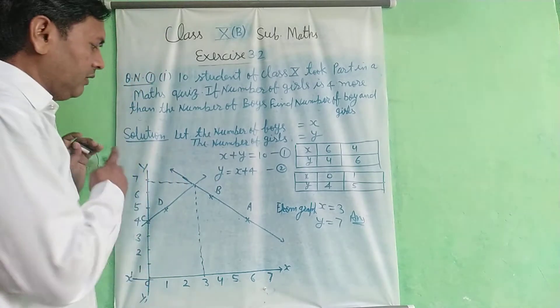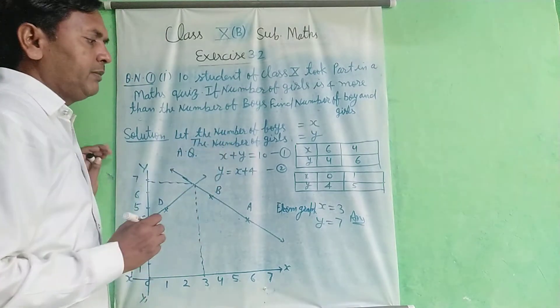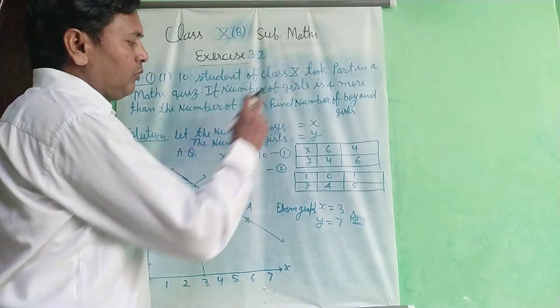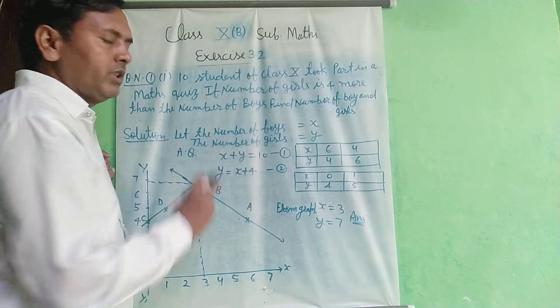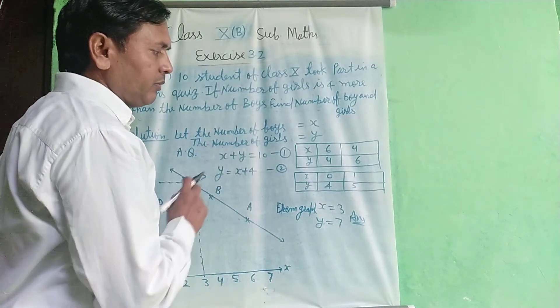So according to the question, x plus y is equal to 10, equation first. Second, the number of girls y is 4 more than the boys, so y is equal to x plus 4.